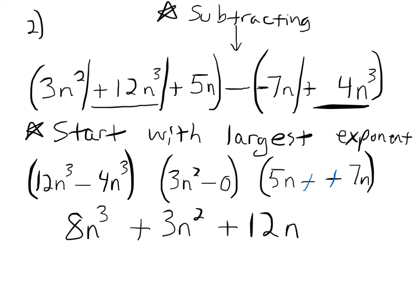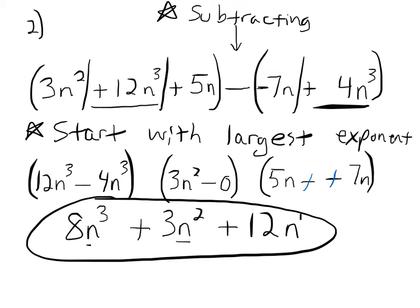This would be your final answer, but before you circle it, always check a few things: make sure it's simplified and in the correct order. I have n to the third power, n to the second power, n to the first power — no like terms that I can combine, and they are in the correct descending order with the highest exponent going down to the lowest. So that is my final answer.